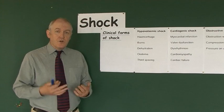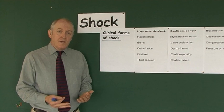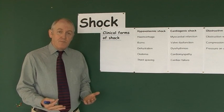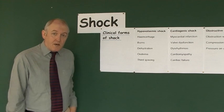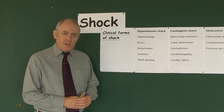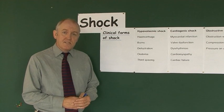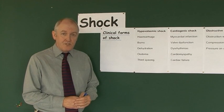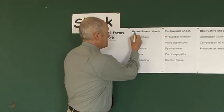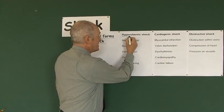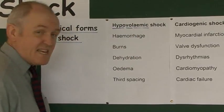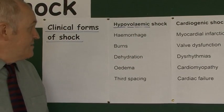We're going to look at the causes of shock, and as we do this it'll give us a classification for describing shock that may arise in our patients. The first one is probably the most common we come across in clinical practice: hypovolemic shock. Hypo means low, vol means volume, and emia of course is in the blood — hypovolemic shock.